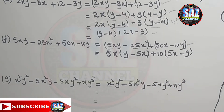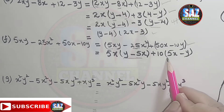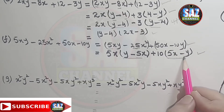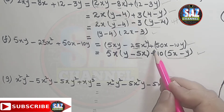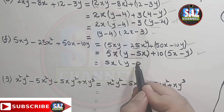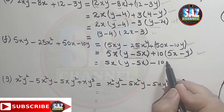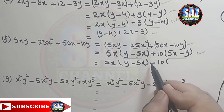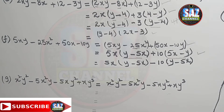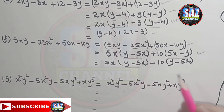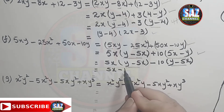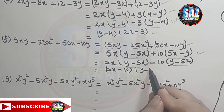Again, notice that in the first part y is positive, but in the second part y is negative. I have to rearrange this bracket by multiplying and dividing by minus sign. My expression takes the form: 5x into (y minus 5x) minus 10 times — multiplying and dividing by minus sign, one minus sign changes the sign outside, and the bracket becomes (y minus 5x). Now y minus 5x is the common group — extract it out, giving (5x minus 10) into (y minus 5x).